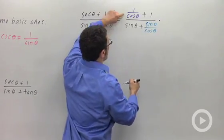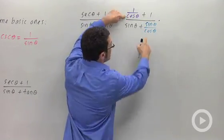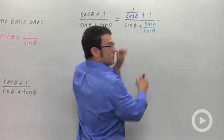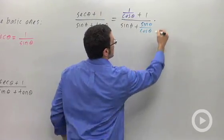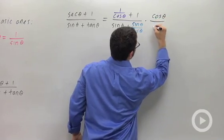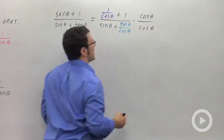Notice that I have a complex fraction here. And the denominators in the little fractions are cosine theta. So I can get rid of them by multiplying the top and bottom by cosine theta.